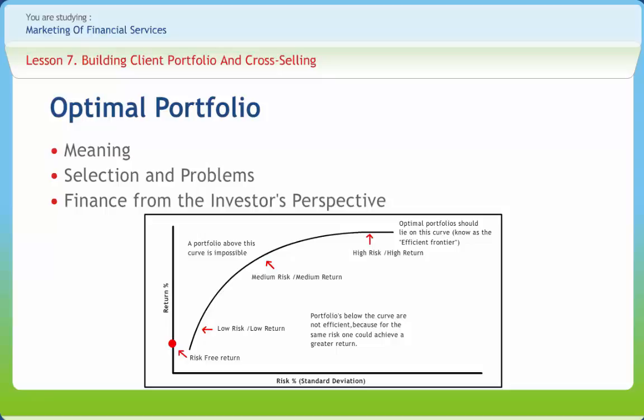Also known as an efficient portfolio, an optimal portfolio is a collection of assets that adequately helps an investor reach his or her financial goals. Determining whether or not a portfolio is efficient or optimal is somewhat subjective, since what is a good fit for one investor may not serve the needs of a different investor. In order to determine if a portfolio is truly optimal, it is important to look closely at investor preferences and goals, assessing the general approach of the investor to finance.